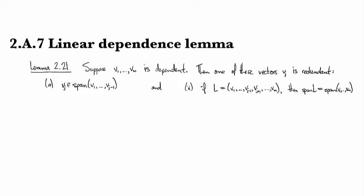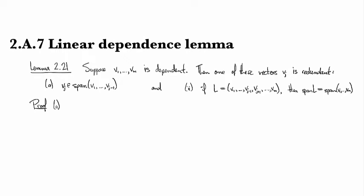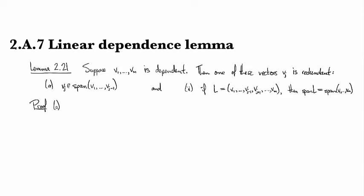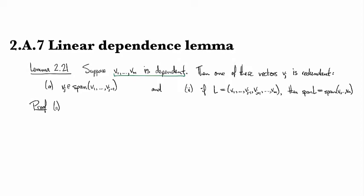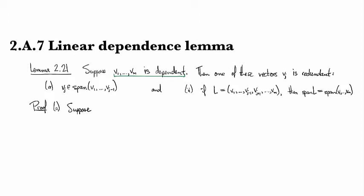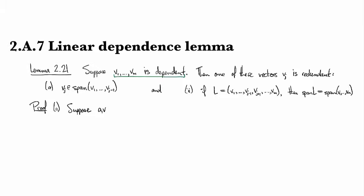For the proof, we'll start by proving step A. The hypothesis here is we're assuming that we've got some dependent set v_1 through v_m.